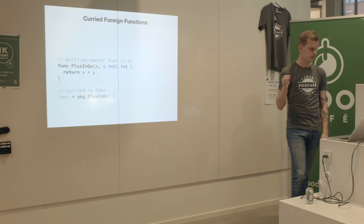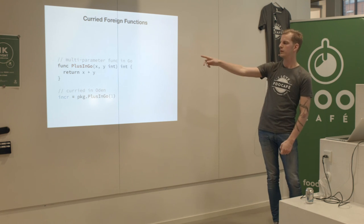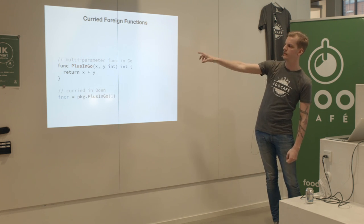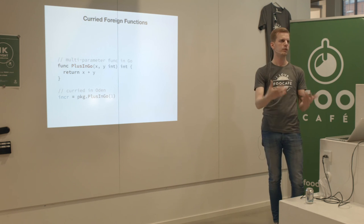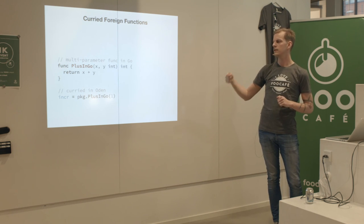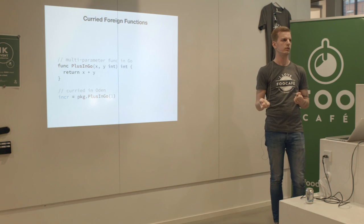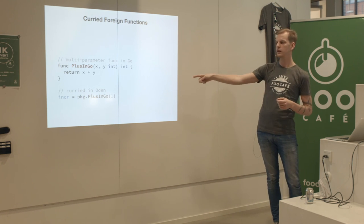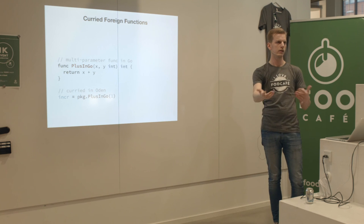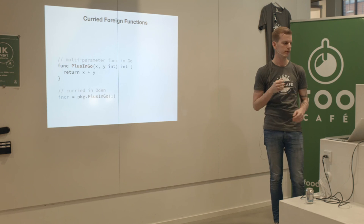Functions written in Go get automatically curried when used from Oden, so you can apply them to just one argument and get another function back. You can use them just as you would with Oden functions.